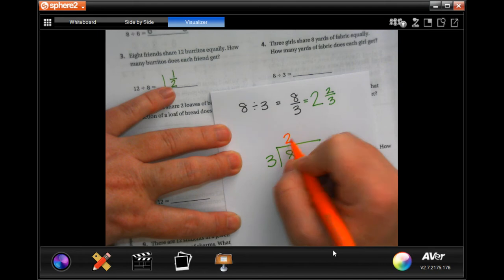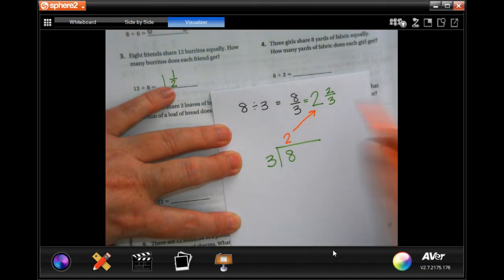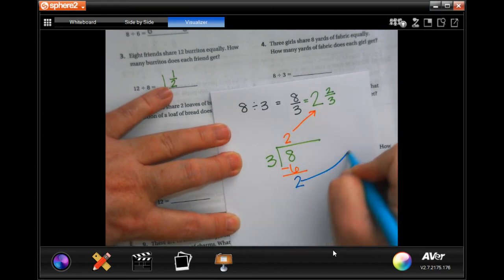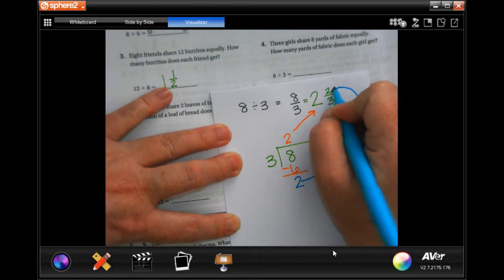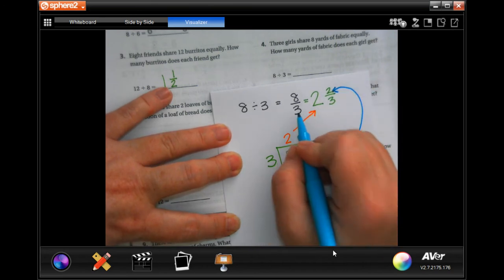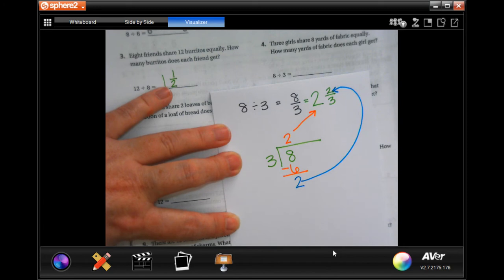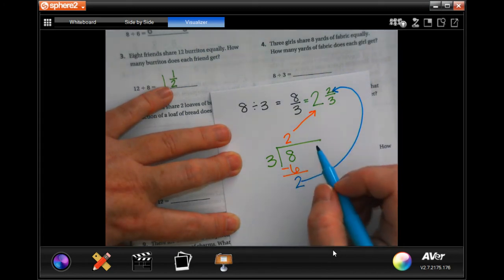Three goes into eight twice. Two times three is six, subtract and I get two, and my denominator stays the same. That's all I did, but you can do it mentally.